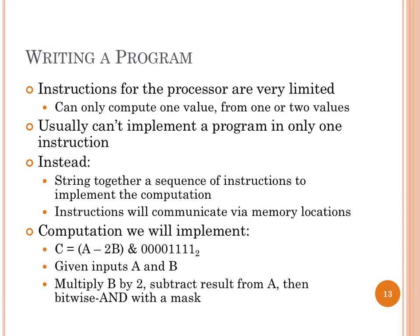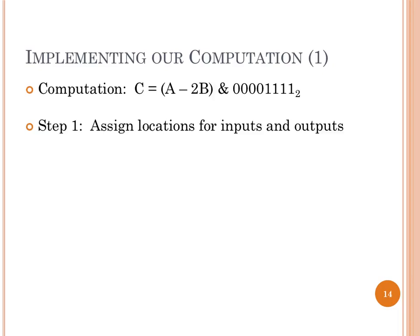Here's what we're going to implement: a simple computation we can break into steps. There's definitely no single instruction that does this whole thing. The first step is to multiply B by 2, then subtract that result from A, and finally take only the low 4 bits by bitwise ANDing with a mask of 00001111. As a sequence of steps, you figure out where inputs come from and where outputs go — that's the interface of your program — then decompose the computation into instructions.